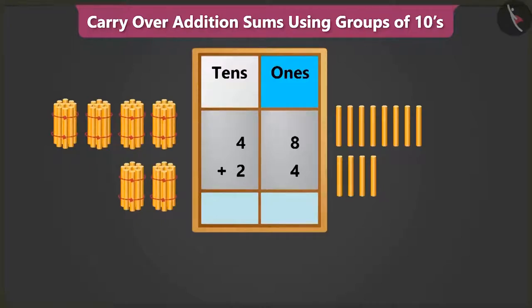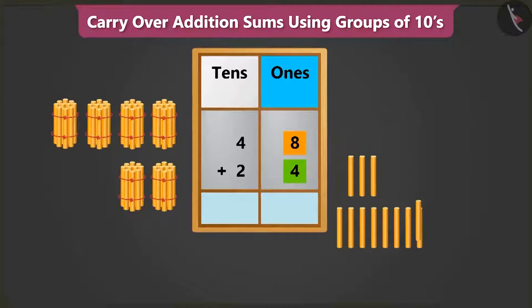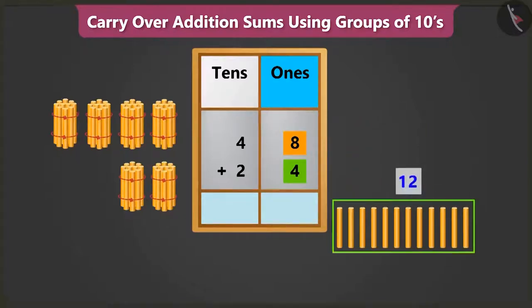First, let's add the numbers in the ones place. We have to add 8 ones to 4 ones. So, count after 8: 9, 10, 11 and 12. This means 8 ones and 4 ones add up to 12 ones.